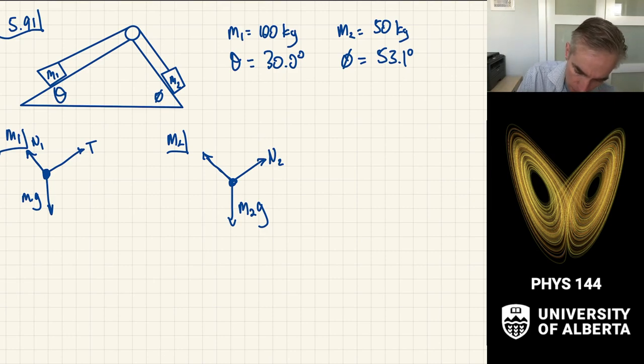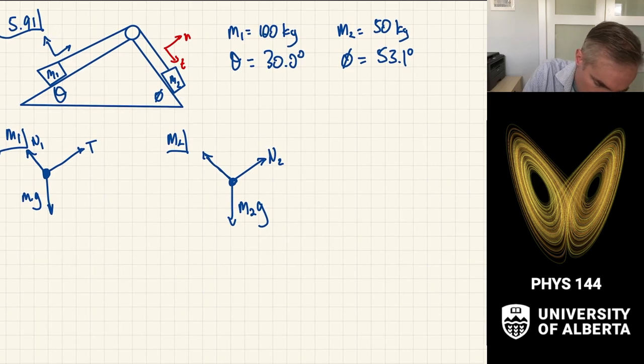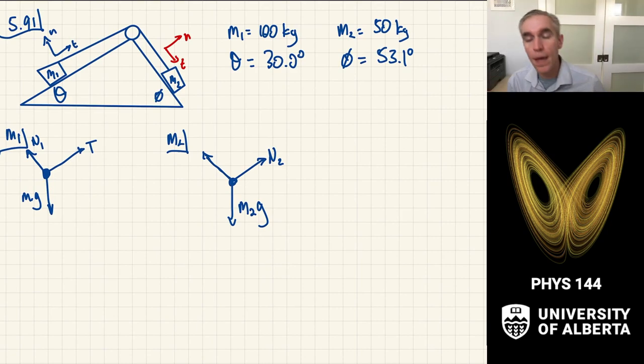This is an example of a case where we're going to choose two different coordinate systems that are associated with the normal tangential coordinates for each block, respectively. So for the first block, I'm going to pick an Nt coordinate system that's pointed up the ramp like that. And for the second block, I'm going to pick an Nt coordinate system that is pointed down the ramp like that. So we have these two separate coordinate systems. And the reason why we set up these coordinate systems as kind of an individual for each block is that we can pick them so that they relate to each other. And we can make the decomposition in those coordinate systems to be a lot easier.